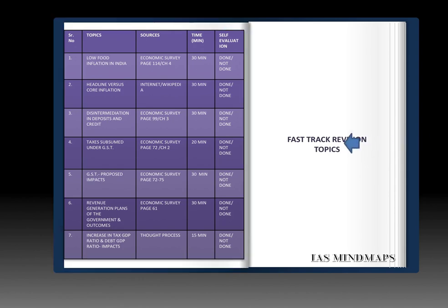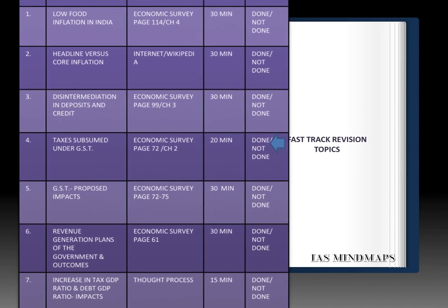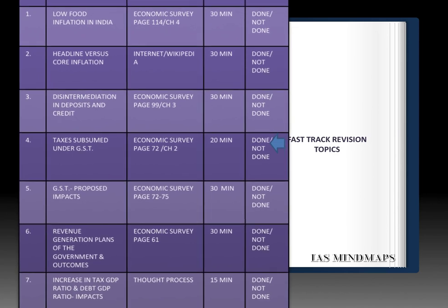In the field of Economic Survey 2017 Volume 2, fast track revision topics are important especially for single-liner questions. First, low food inflation in India — the reasons behind it, given on page 114, Chapter 4, in a box. Second, the difference between headline versus core inflation — a single-liner question expected; you can refer to the internet and Wikipedia. Third, disintermediation in deposits and credit, given on page 99, Chapter 3 — a statement-based question can be expected. Fourth, taxes subsumed under GST (Goods and Services Tax), given on page 72, Chapter 2 of Economic Survey — this is very important for statement-based questions.